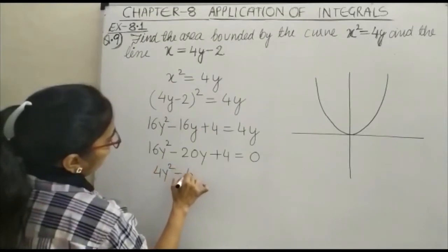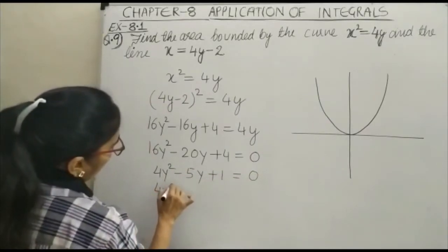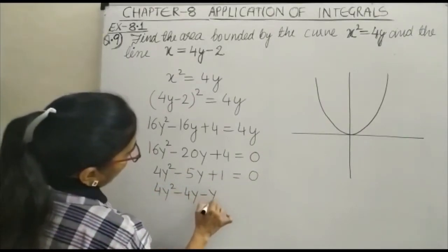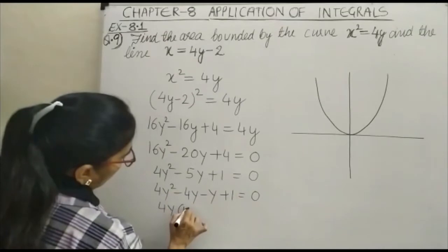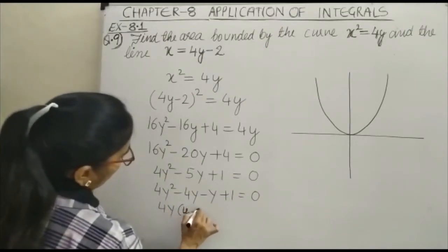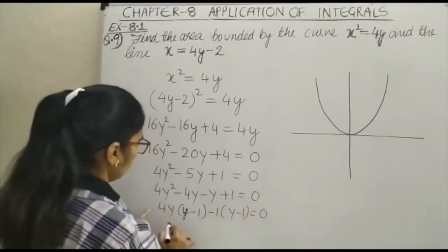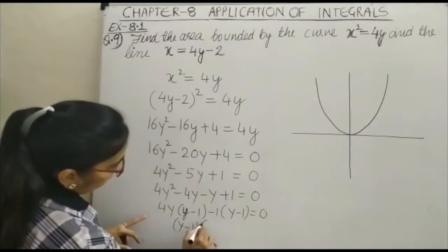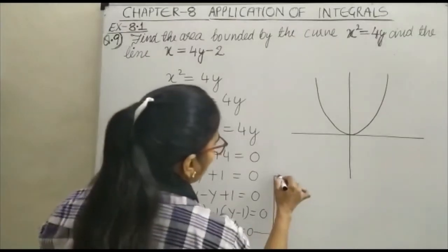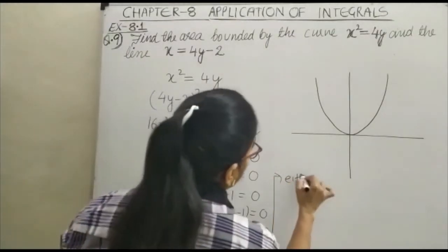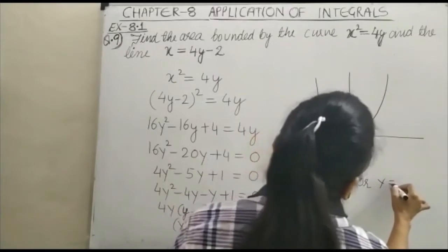After dividing by 4, we get 4y² - 5y + 1 = 0. Factoring: 4y² - 4y - y + 1 = 0, which gives us (4y - 1)(y - 1) = 0. So either y = 1 or y = 1/4.